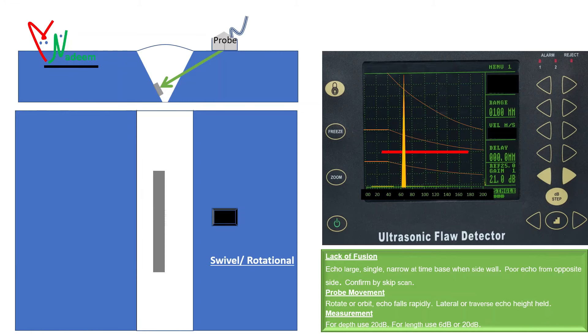Give swivel or rotational or orbital movement. If amplitude falls rapidly with the changing position of the probe then the found defect is lack of fusion.